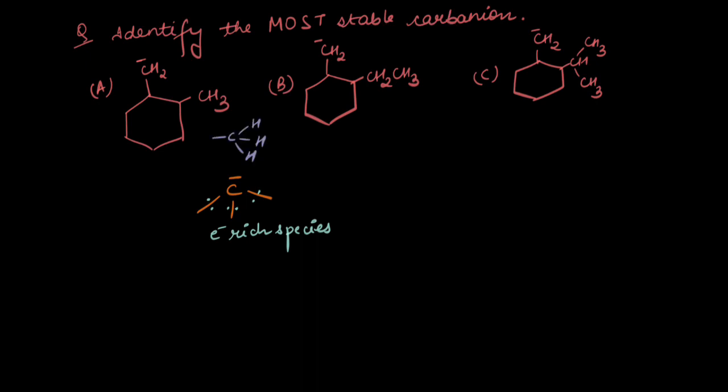In order to stabilize itself, the carbanion would want to shed that electron density away. But what do we have here? We have alkyl groups present around it. Alkyl groups are essentially electron-donating groups. If we have a methyl group, for example, carbon being more electronegative than hydrogen would pull electron density of the respective bonds towards itself, becoming electron-rich, and thus push electron density into the chain — giving it a plus-I effect. For the second option, the carbon attached to the ring has another methyl group, so methyl pushes electron density to the methylene group, giving it a stronger plus-I effect overall.